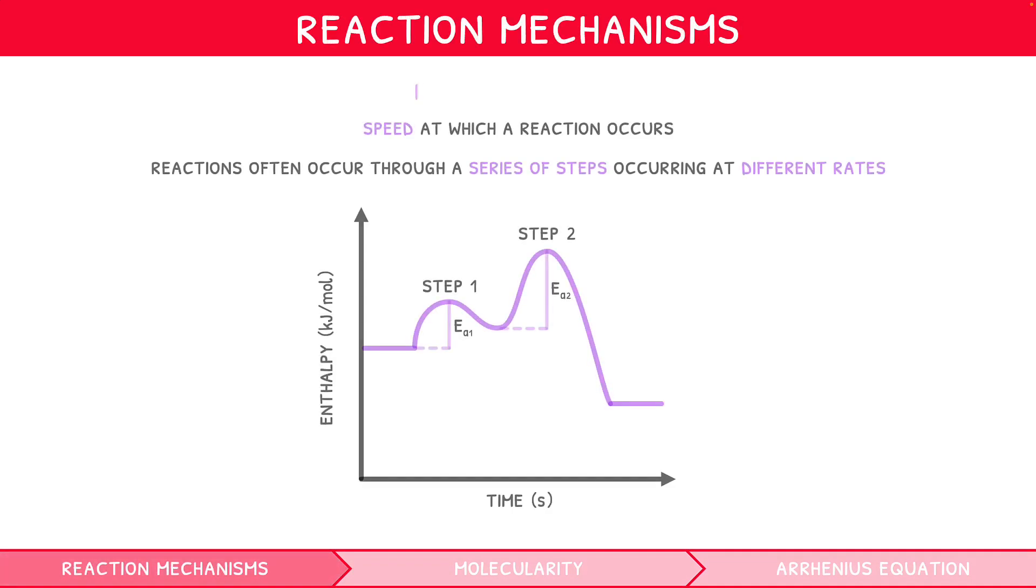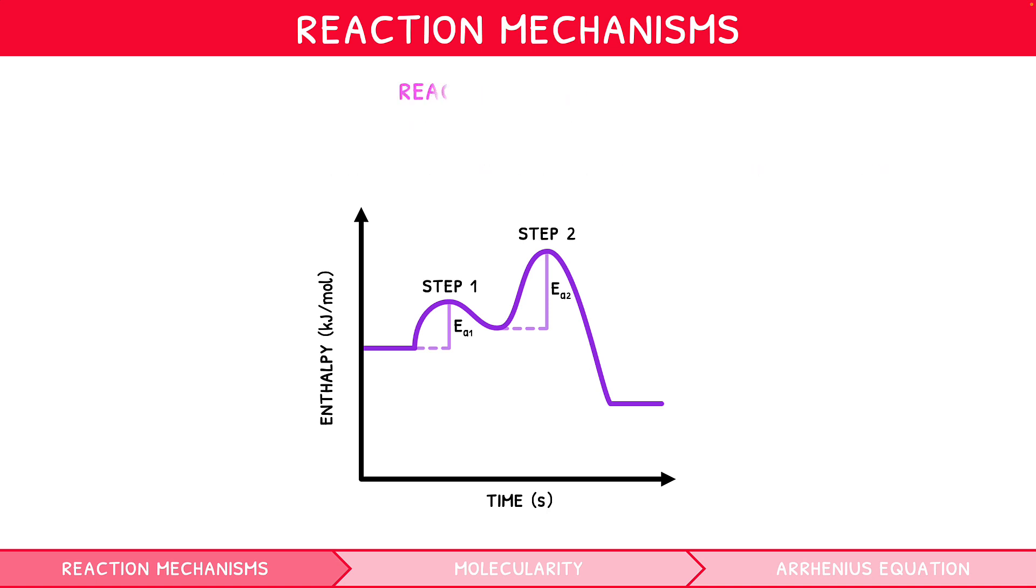As introduced in the previous Topic 16 video, a reaction can occur through several steps. These collectively form what is known as a reaction mechanism. When proposing a reaction mechanism, there are several rules that must be followed. It must be consistent with the overall stoichiometric equation, i.e. the steps must combine and cancel to give the overall equation, and it must be consistent with the rate equation.